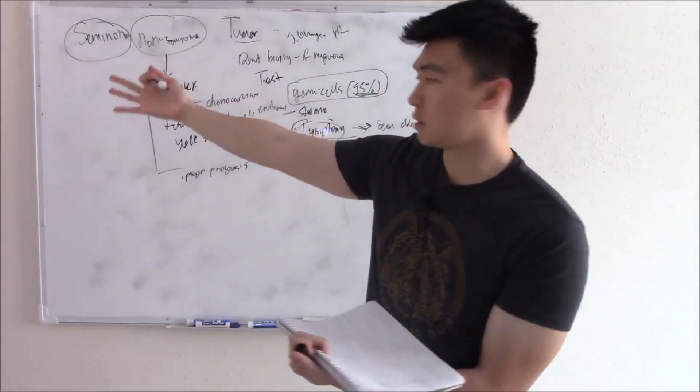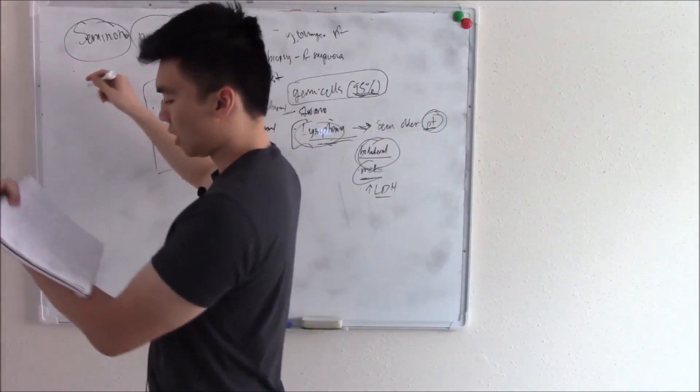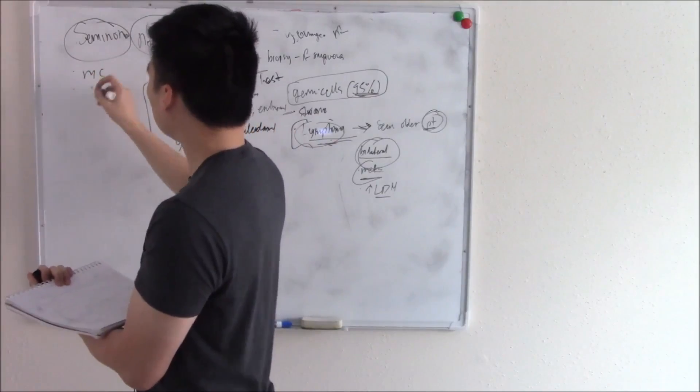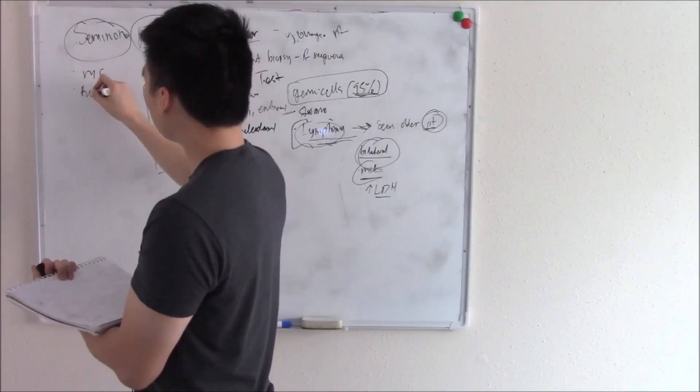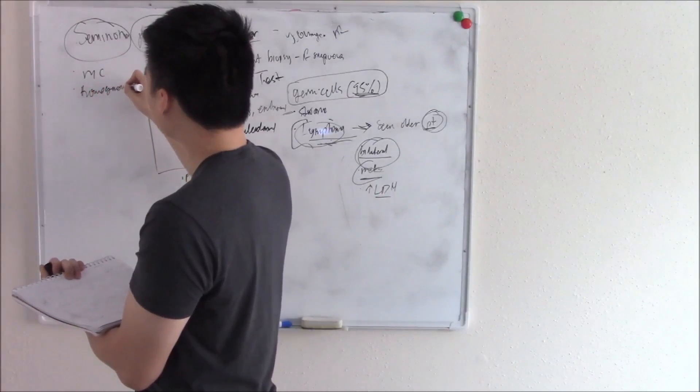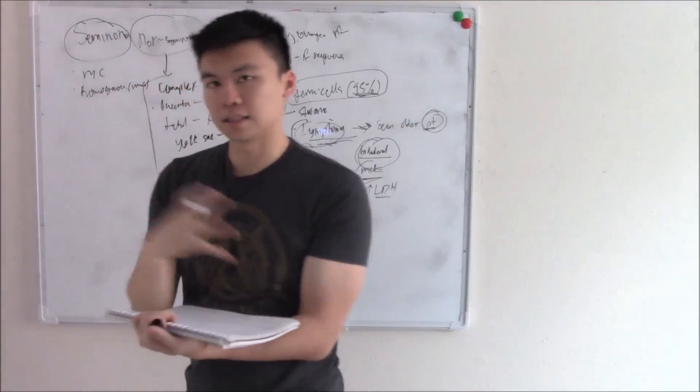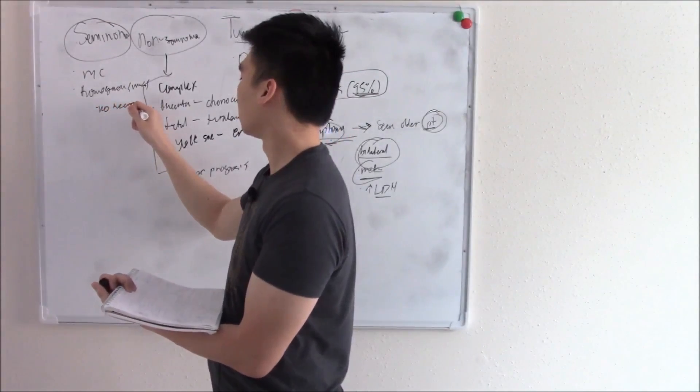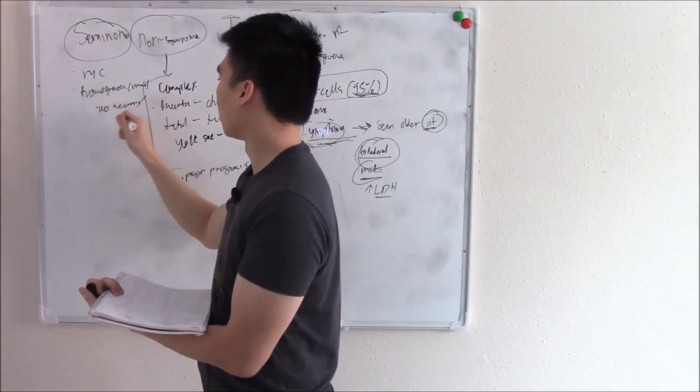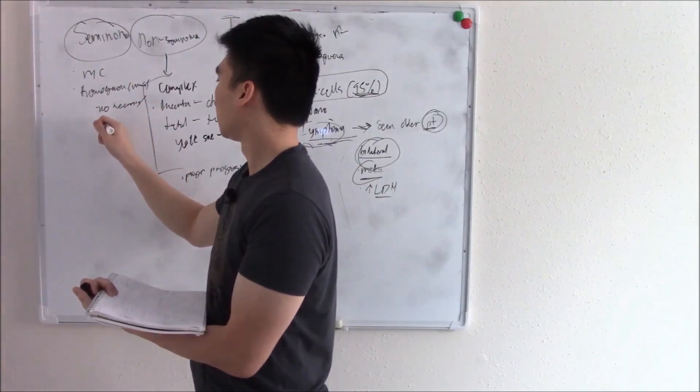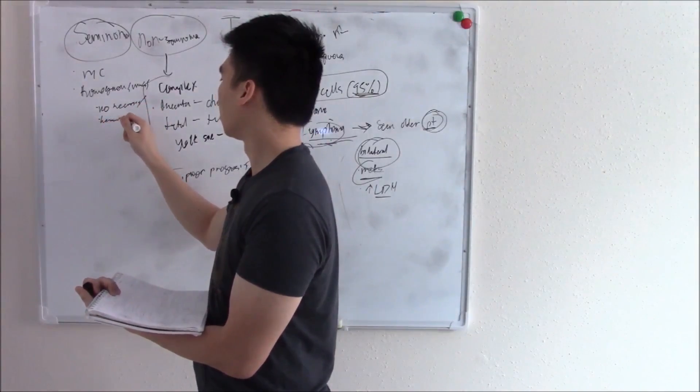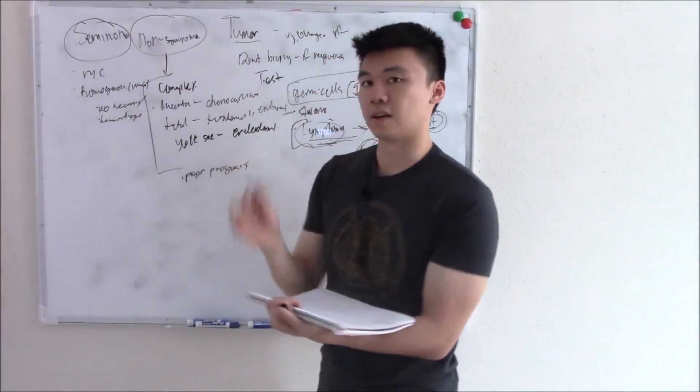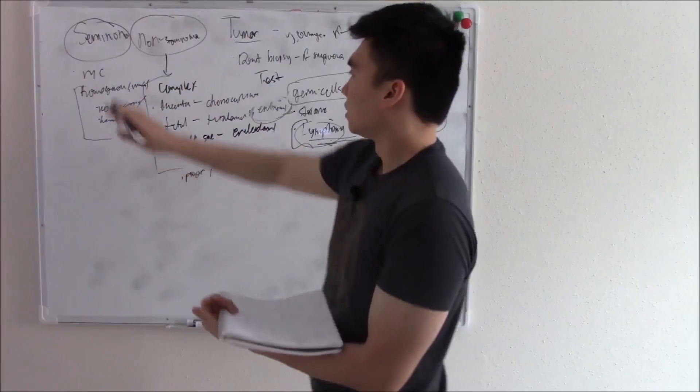So I'll just talk about seminoma first. That's the most common one. Seminomas, not much to talk about it other than it's the most common. It's this nice homogeneous mass and it doesn't have areas of necrosis. So no necrosis or hemorrhage. Very neat mass, easy to identify. Again, pictures will be in my notes. That does it for seminomas.